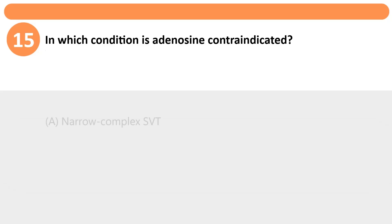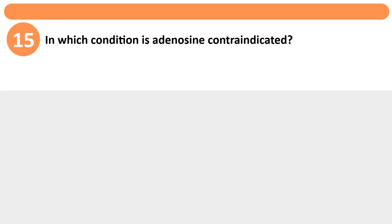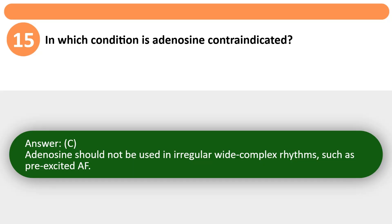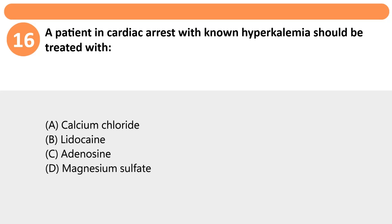In which condition is adenosine contraindicated? A. Narrow complex SVT. B. Regular monomorphic wide-complex tachycardia. C. Irregular wide-complex tachycardia. D. AV nodal re-entry tachycardia. Answer: C. Adenosine should not be used in irregular wide-complex rhythms, such as pre-excited atrial fibrillation.